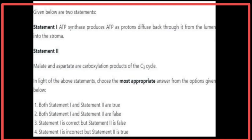Given below are two statements. Statement 1: ATP synthase produces ATP as protons diffuse back through it from the lumen into the stroma — Statement 1 is correct. Statement 2: Malate and aspartate are carboxylation products of the C3 cycle — Statement 2 is false. The most appropriate answer is Statement 1 is correct and Statement 2 is false.